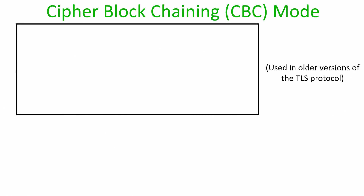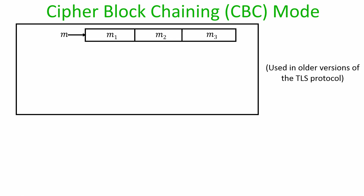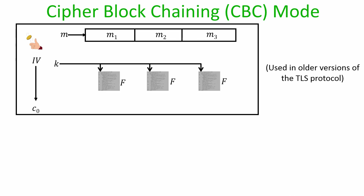Now let us go to the second mode: Ciphertext Block Chaining, or CBC mode, which was used in some older versions of the real-world TLS protocol. Assume you have 3 blocks each of big L bytes. We first choose a random IV, denoted C0, which will be part of the ciphertext. The length of C0 is the same as the block input size of f, namely big L bits.